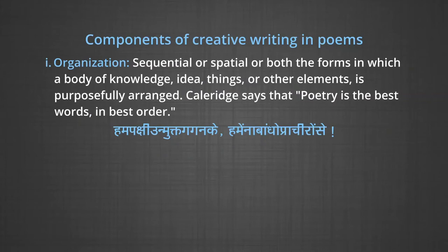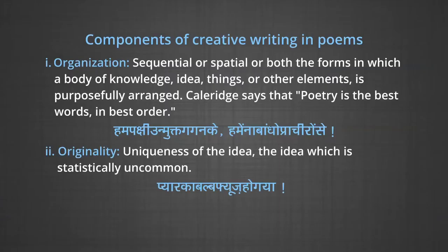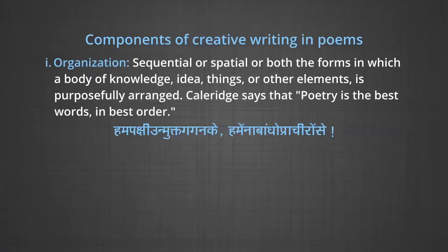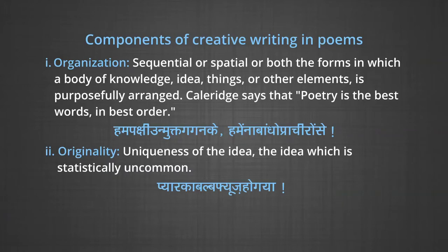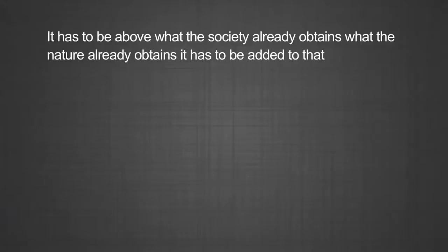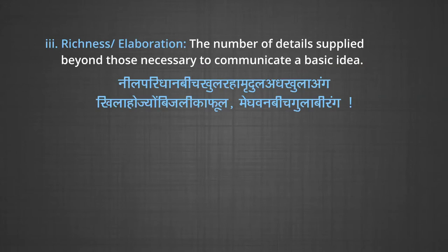Components of creative writing in poems. Organization — sequential or spatial are both forms in which a body of knowledge, idea, things or other elements is purposefully arranged. Coleridge says that poetry is the best words in best order. Then originality — every poem ought to have novelty and newness; it has to be a creative, innovative expression. Uniqueness of ideas — the ideas which are statistically uncommon. Then another element is richness or elaboration — any poem has to be rich and above what society and nature already contain; it has to have added elements of richness, the number of details supplied beyond those necessary to communicate basic ideas.